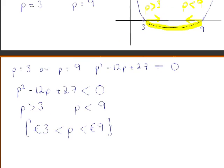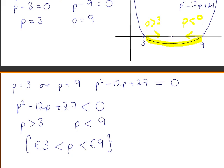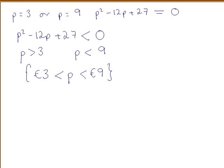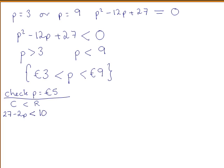We should check if we are correct. We are saying that any price between 3 and 9 should make a profit, whereas any price less than 3 or greater than 9 will not make a profit. We will check p equal to 5 euro. To make a profit, the cost should be less than the revenue: 27 minus 2p less than 10p minus p squared.